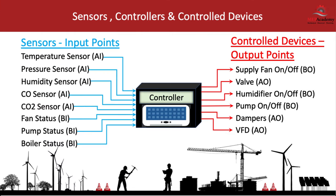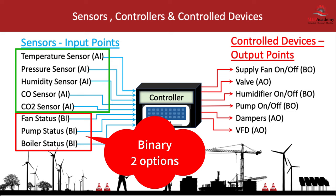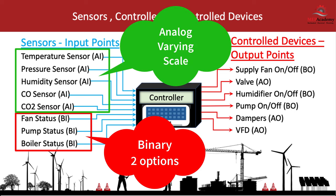There are all kinds of input and output devices for controlling the environment, and each device is meant to serve a particular purpose. The difference between a binary and analog input or output device is the number of positions or steps you can have. A binary input or output device has two options, such as either on or off, or stop or start. An analog device can vary, such as in reading various temperatures and pressures, or in modulating a valve or damper position to increase flow in varying amounts — not just full open or full close.